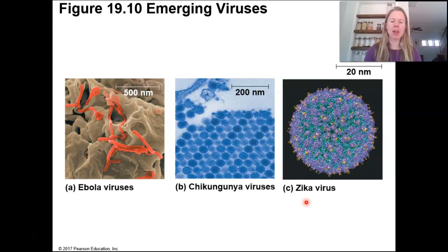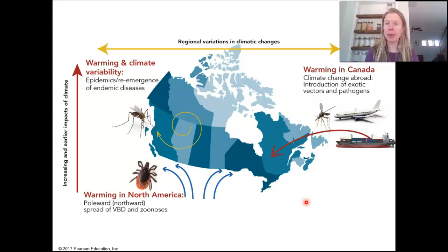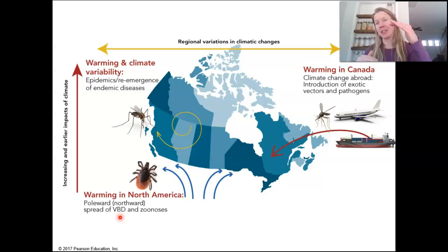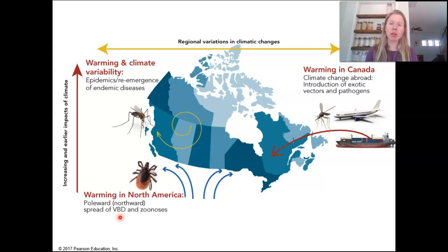Some of the things we're doing right now are actually encouraging new viruses to emerge. Climate change may be changing the presence of diseases in certain areas. As North America warms, we see more vector-borne disease — diseases transmitted by insects like ticks or mosquitoes. Those insects have typically been kept at southern elevations or equatorial and subtropical areas, but as northern latitudes warm, those vectors can live in new environments. That's a big concern — how those diseases might spread in a warmer climate.